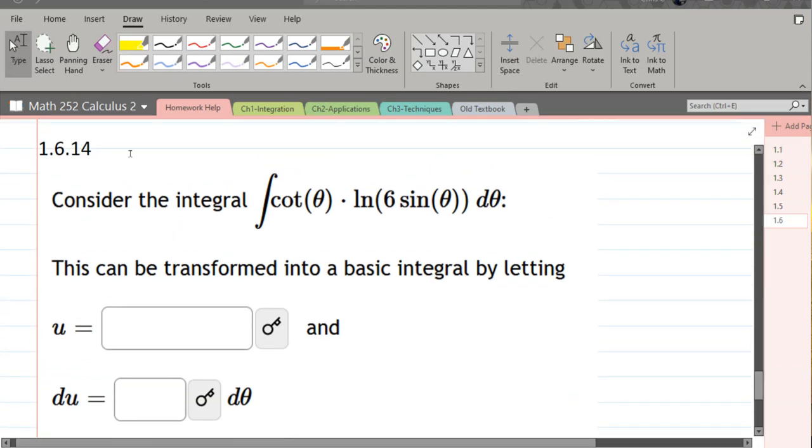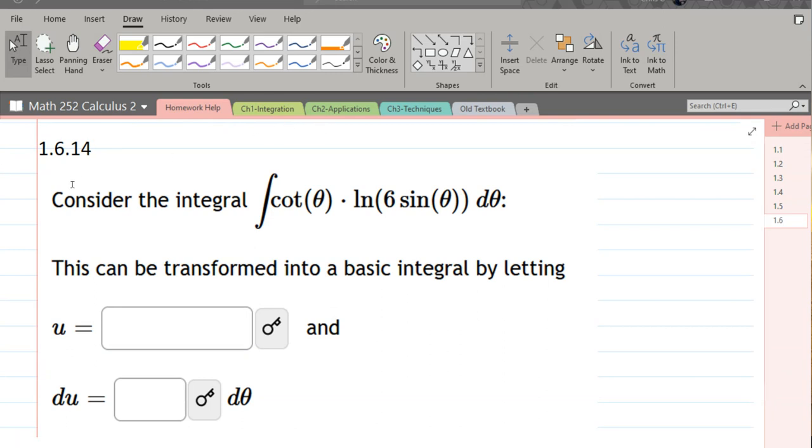We're going to look at this integral: cotangent theta times ln of six sine theta d theta. This can be transformed into a basic integral by making a u substitution.